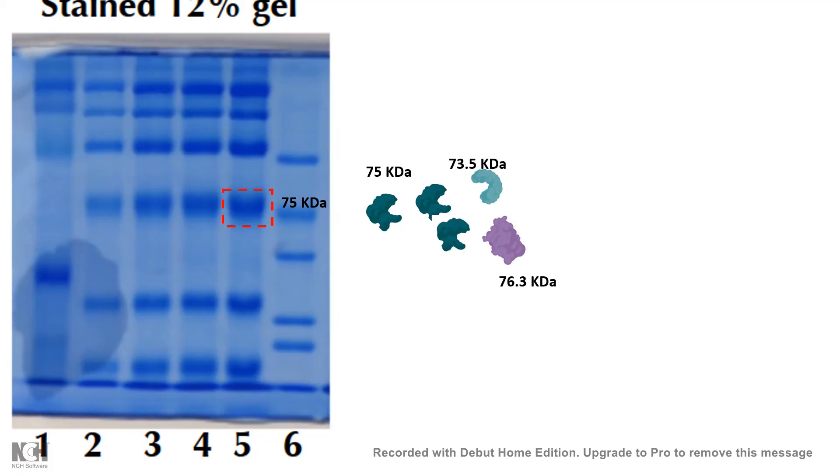Our band at 75 kilodaltons might not be a pure band of only one type of protein. It could be a complex band having several types of proteins. We need a second parameter which can resolve this issue and make the separation better.